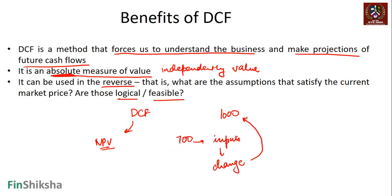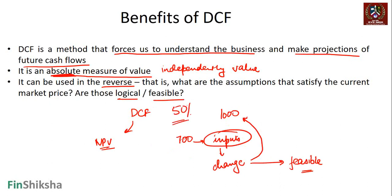Third, even if I'm not matching the market price, when I try to reach it by changing my inputs, I can ask whether those changes are feasible. If to arrive at 1,000 rupees I need to assume 50% growth, and that is not feasible, then that gives me an input that the stock could be incorrectly valued by the market.